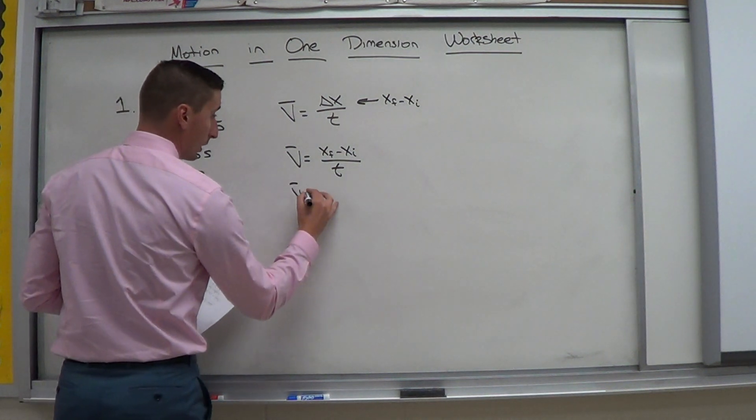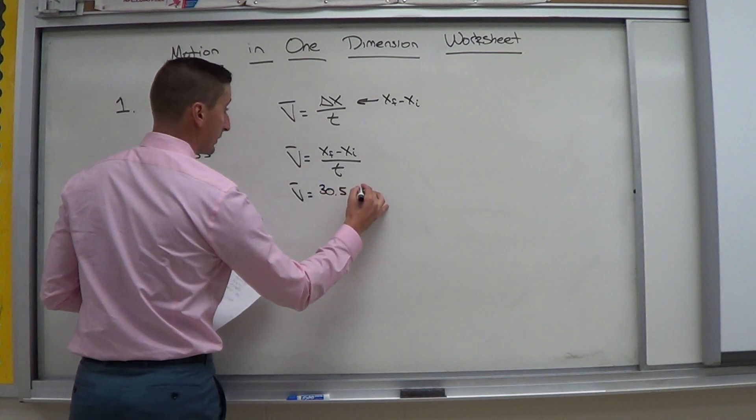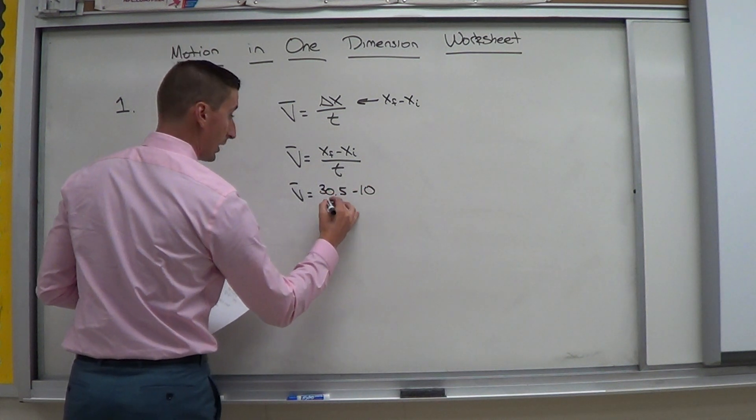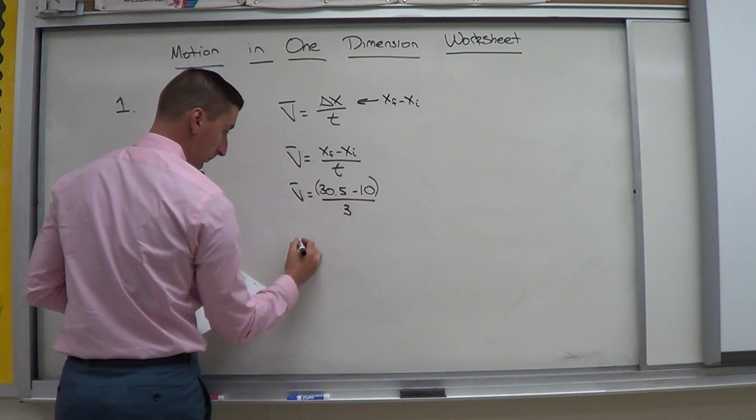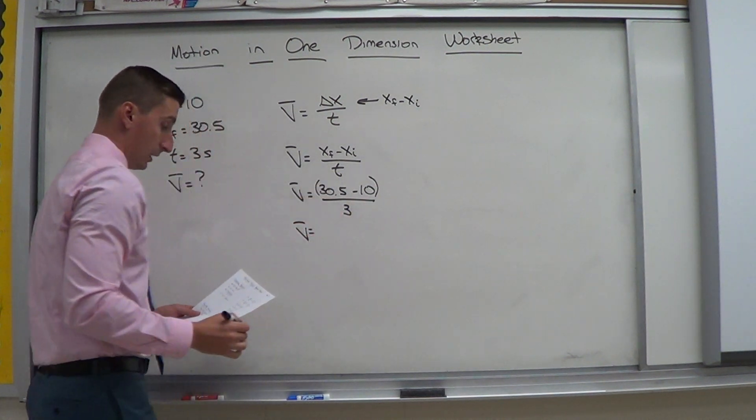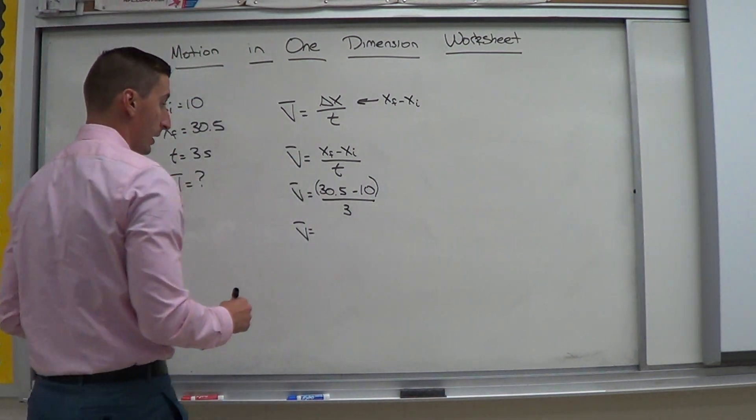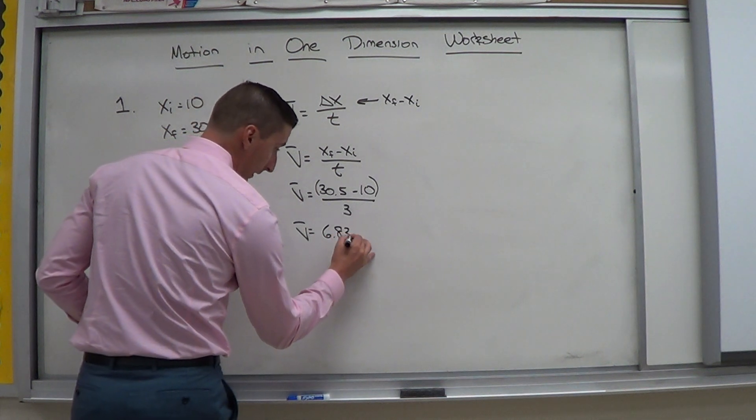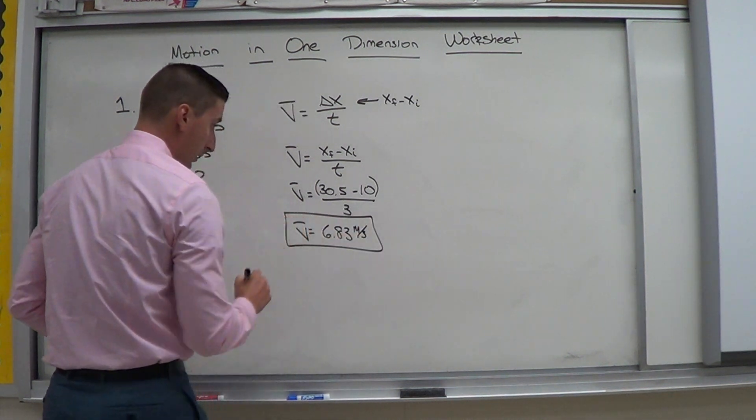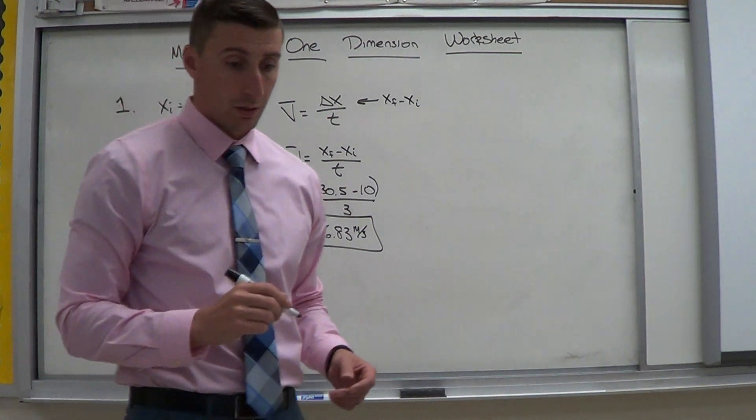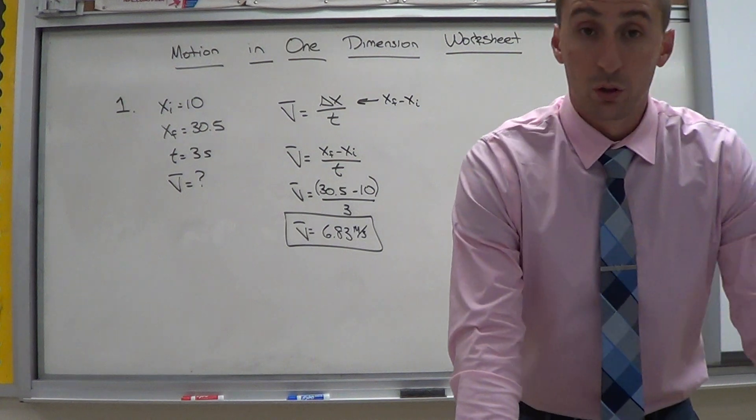V is what I'm looking for. xf is 30.5 minus 10 divided by 3. Do the algebra and you should get somewhere between 6.83 meters per second. Alright.